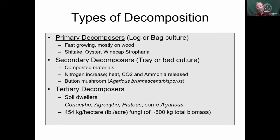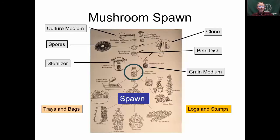It's important to think about mushrooms as primary, secondary, or tertiary decomposers. Primary decomposers grow on wood, like shiitake. Secondary decomposers grow on composite materials — classically the button mushroom — using more of a bed or tray culture. Tertiary decomposers are in the soil, with species like Amanita and some Agaricus included, though the classification has shifted as the field has evolved.